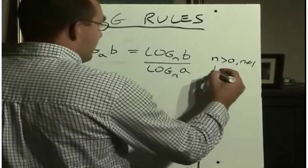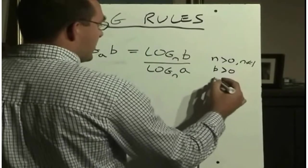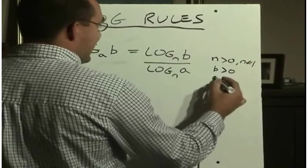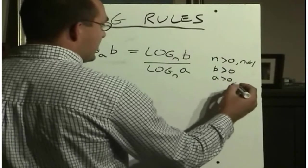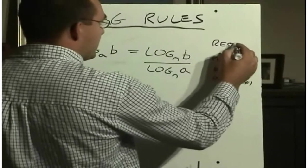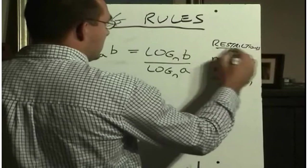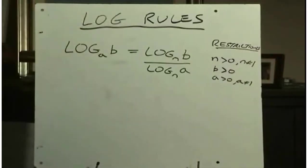And b has to be greater than 0, and a has to be greater than 0, a not equal to 1. So these are some important restrictions to note with this rule.